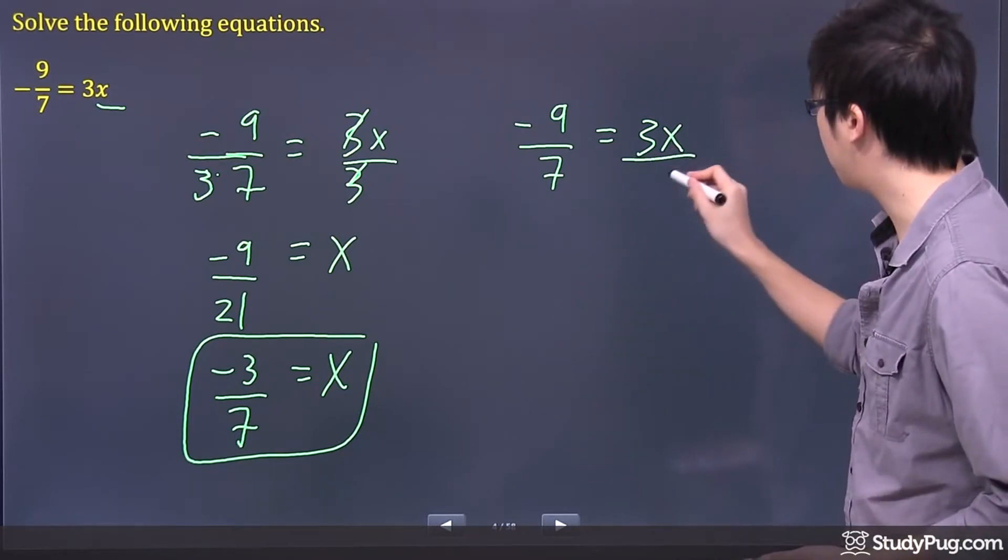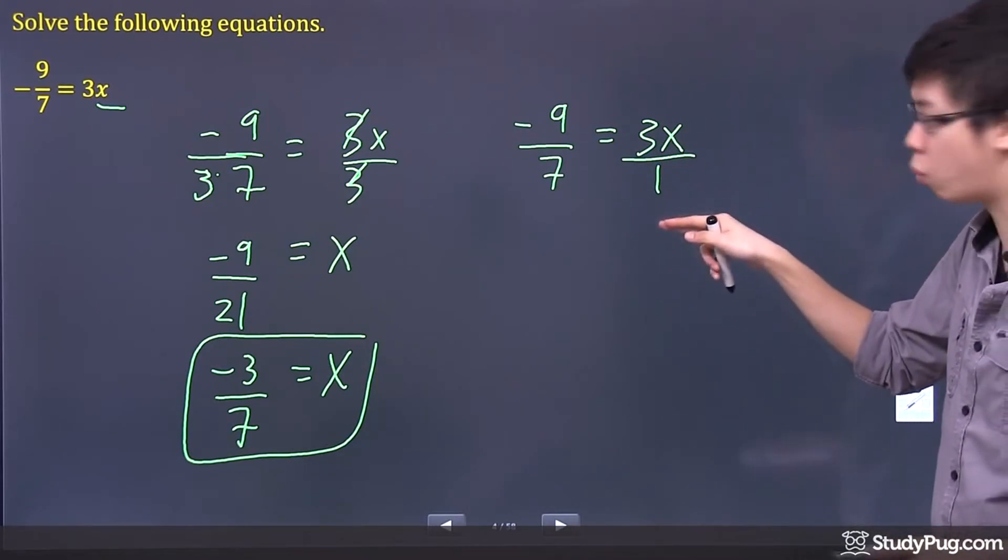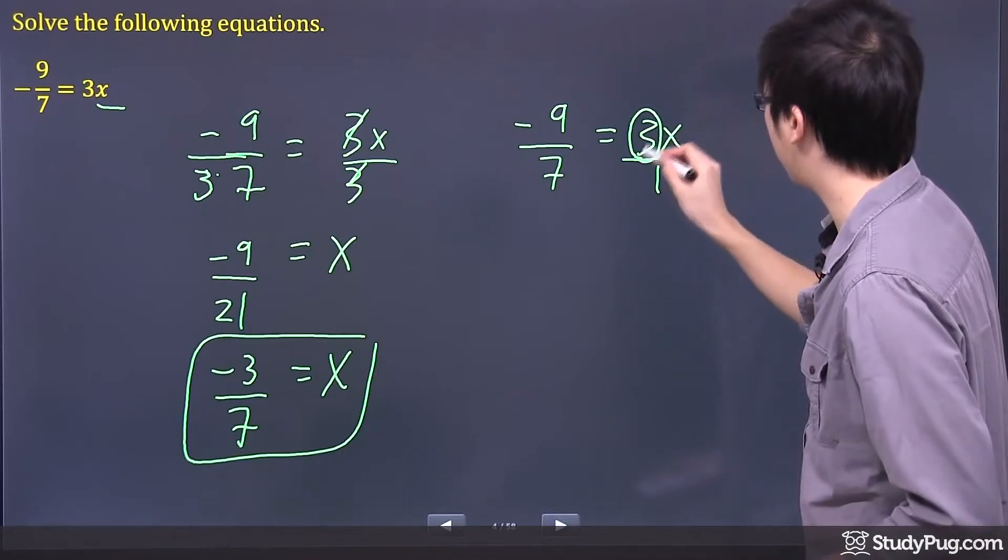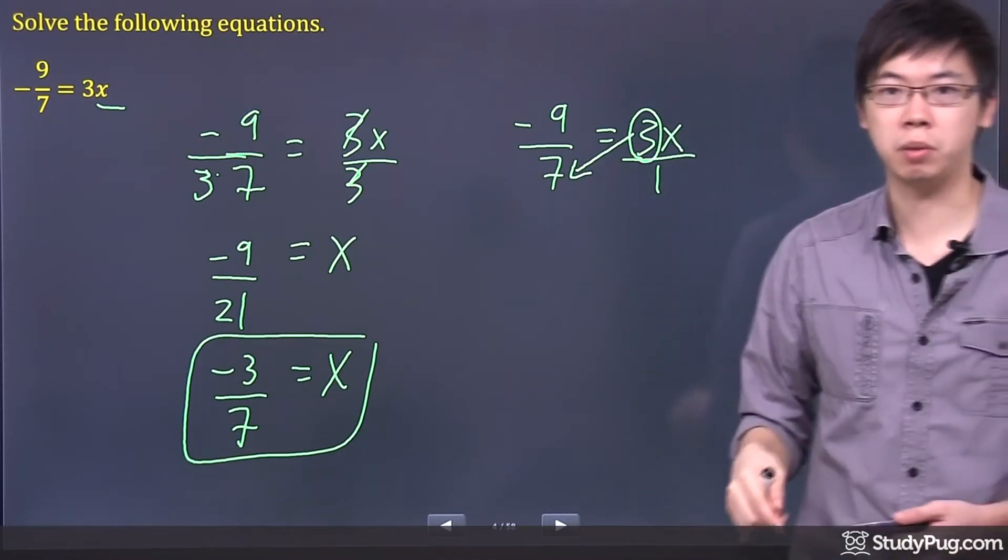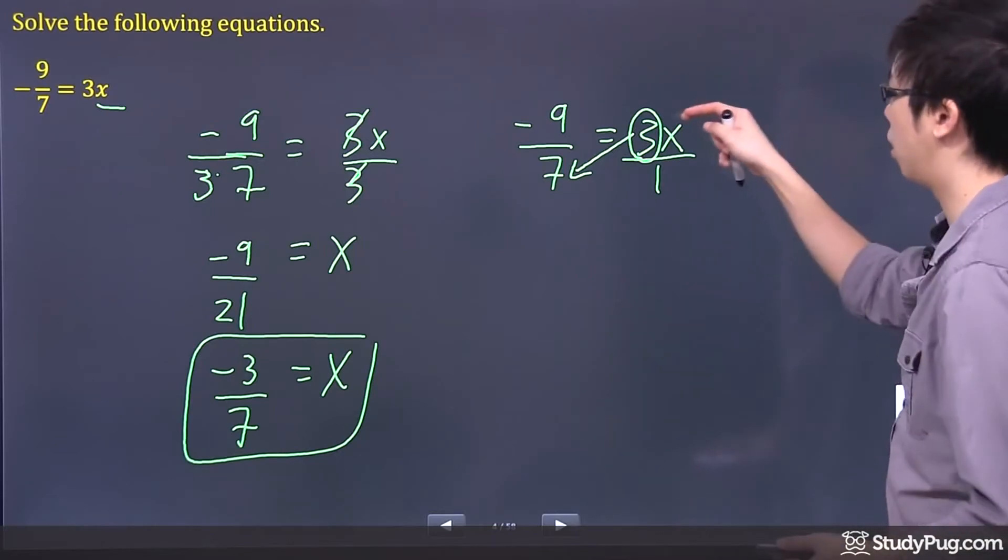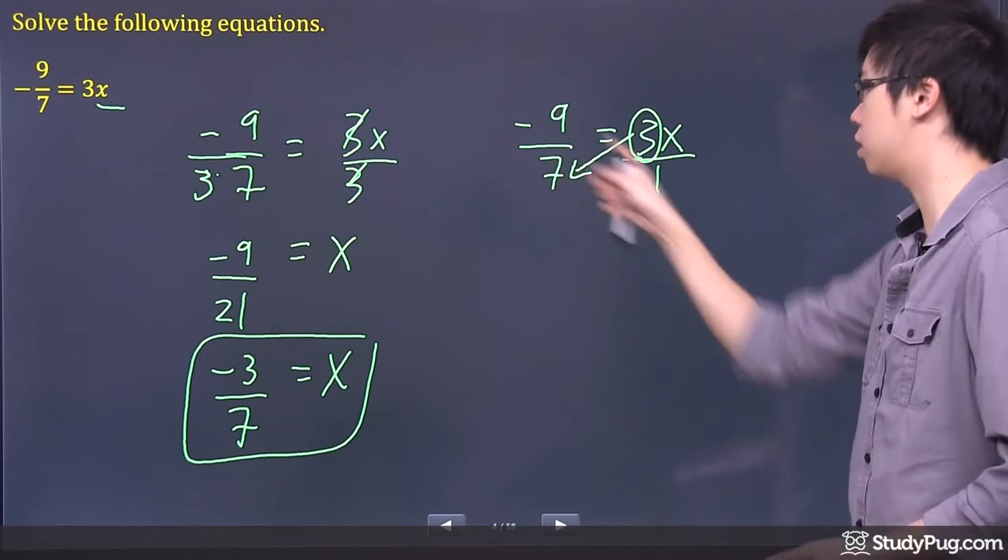So cross-multiplying means that if you pretend, well, this is 3x, technically there's a 1 underneath. What you can do is take this 3 here and multiply it to the bottom down here. It's called cross-multiplying because if you're going to multiply, you have to go across. Now you can go downwards, you can go this way or this way.